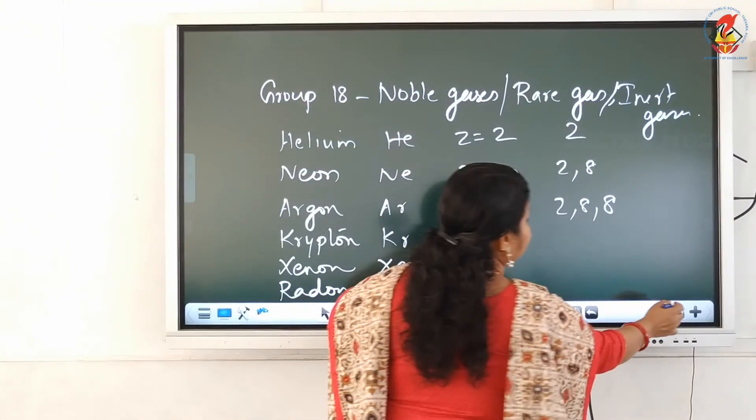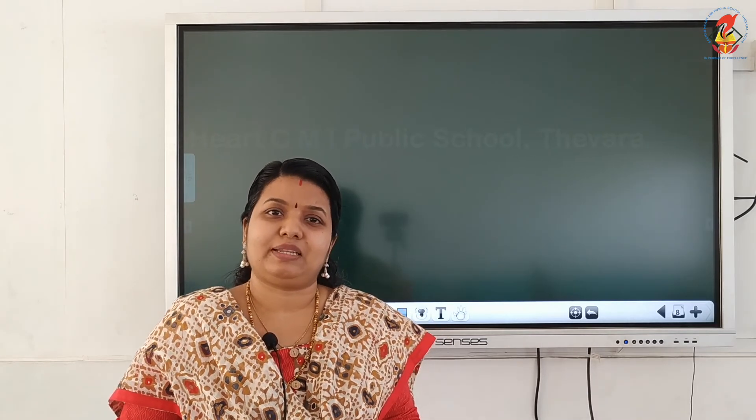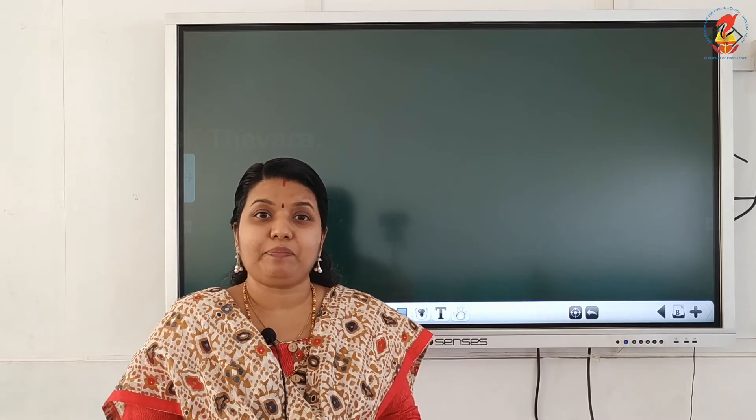What is the significance of groups in the modern periodic table? In the groups, all elements in the same group have the same number of electrons in the outer shell — the same outer electronic configuration and the same number of valence electrons. So their properties are also the same and their valency is the same. Elements of the same group have same outer electronic configuration, same number of valence electrons, same valency, and same properties.